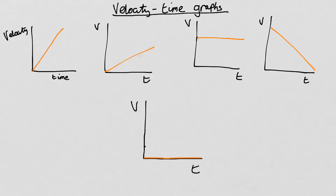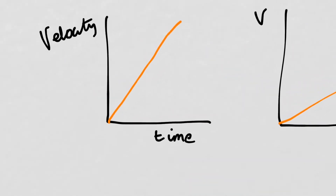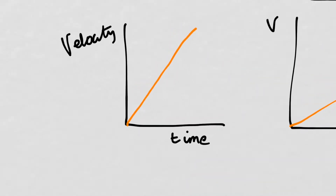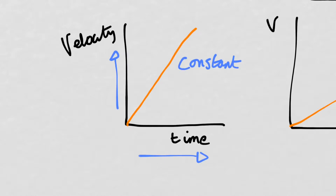So let's start with this graph here. What does this graph show us about the motion of this object? As time goes on, the velocity is clearly increasing. So if velocity is increasing as time goes on, that must mean it's getting faster — it's accelerating, and it's accelerating at a constant rate. So this is constant acceleration.